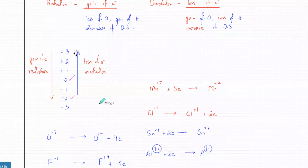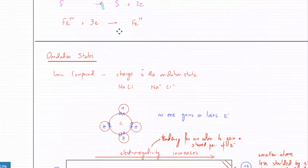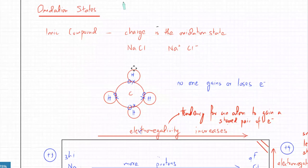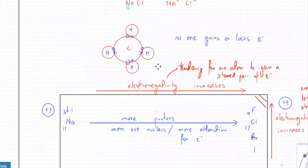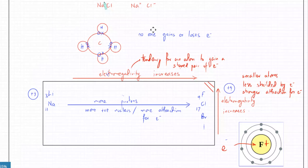So we did some redox reactions. Gain of electrons - reduction happens, the charge becomes negative. Loss of electrons, the charge keeps on increasing - that is one thing we did. Then we talked about oxidation states. I told you that ionic compounds' oxidation state is the charge on the ion, like Na is plus one and Cl is minus one. But then I talked about covalent compounds - they've got a different meaning, like they don't have any charges. So what is oxidation state when you talk about covalent compounds?